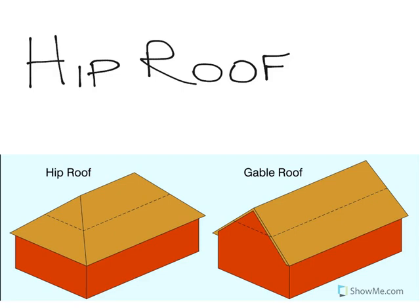As you can see in the illustration below, a hip roof, rather than tipping in on two sides like the gable, actually tips in on all four sides.